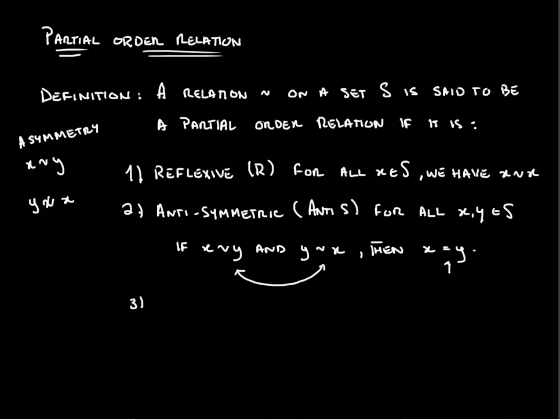Now, for our third condition, we have transitivity. So the relation is transitive, which we'll use T for that, and that is for all x, y, and z that is in S. If x is related to y, and y is related to z, then x is related to z. Partial order is reflexive, anti-symmetric, and transitive.